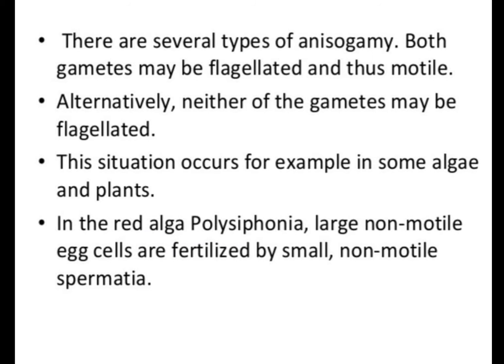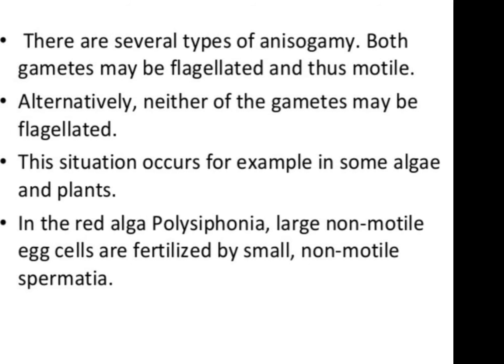There are several types of anisogamy. Both gametes may be flagellated and thus motile. Alternatively, neither of the gametes may be flagellated — a situation occurring, for example, in some algae and plants. In the red alga Polysiphonia, large non-motile egg cells are fertilized by small non-motile spermatia.